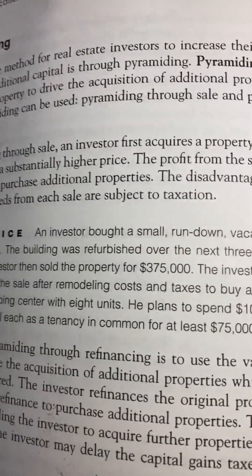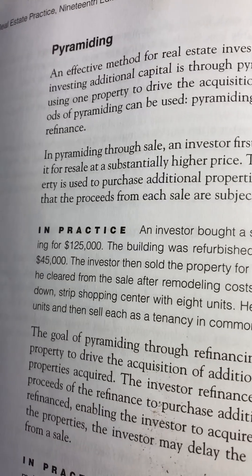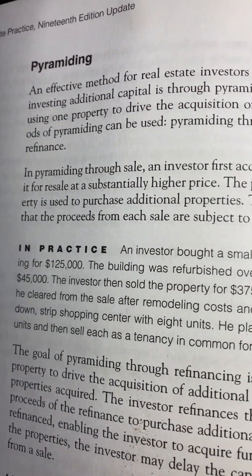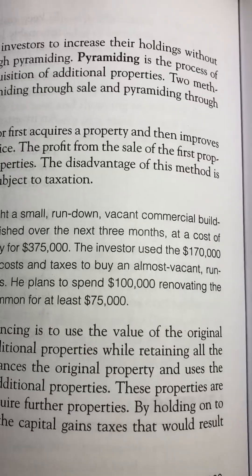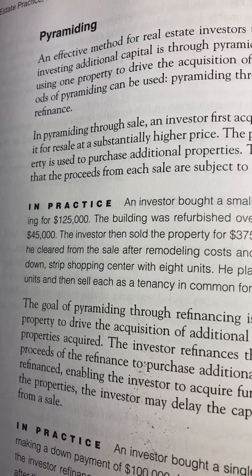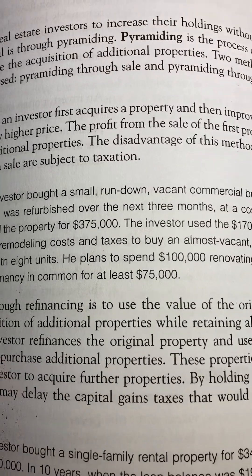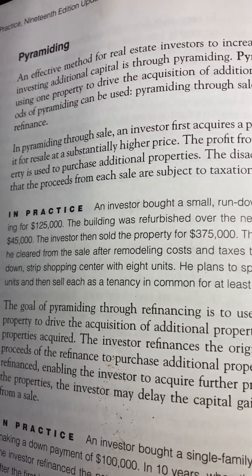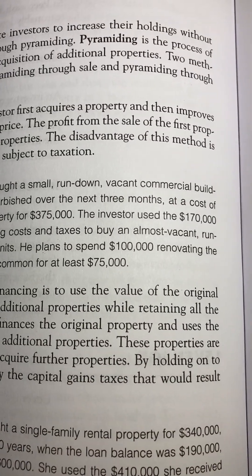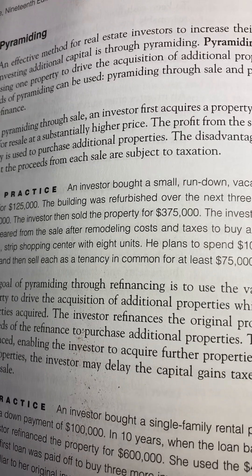Two methods of pyramiding can be used: pyramiding through sale and pyramiding through refinance. In pyramiding through sale, an investor first acquires a property and then improves it for resale at a substantially higher price. The profit from the sale of the first property is used to purchase additional properties. The disadvantage of this method is that the proceeds from each sale are subject to taxation.